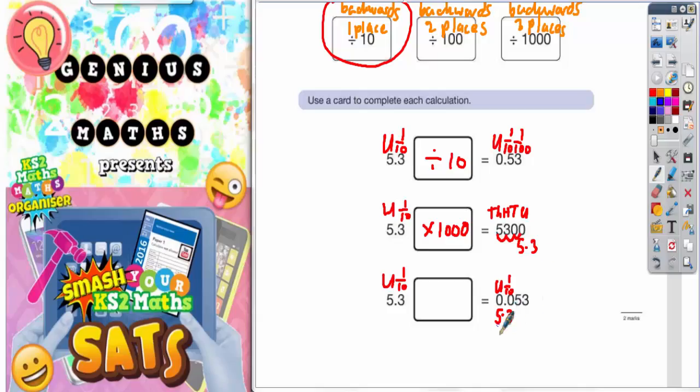the five this time has gone one, two places backwards. It's going from units into the hundredths column, so it's going two places backwards.